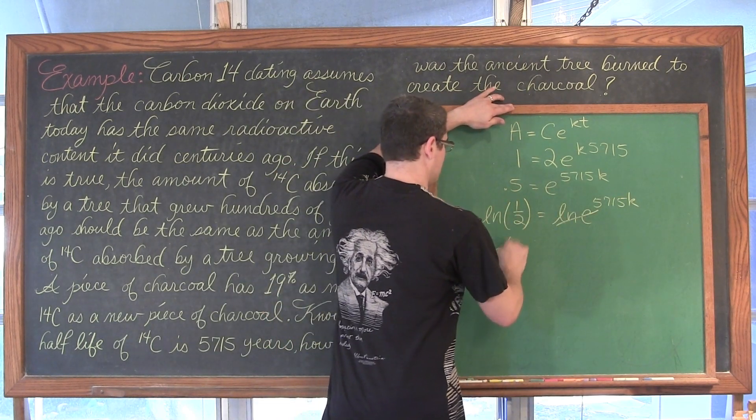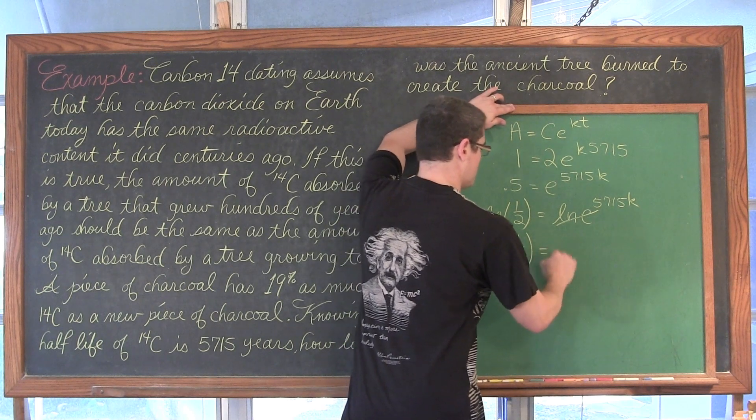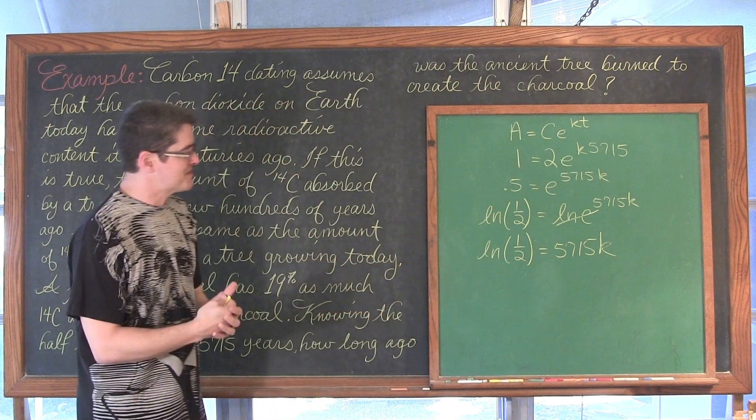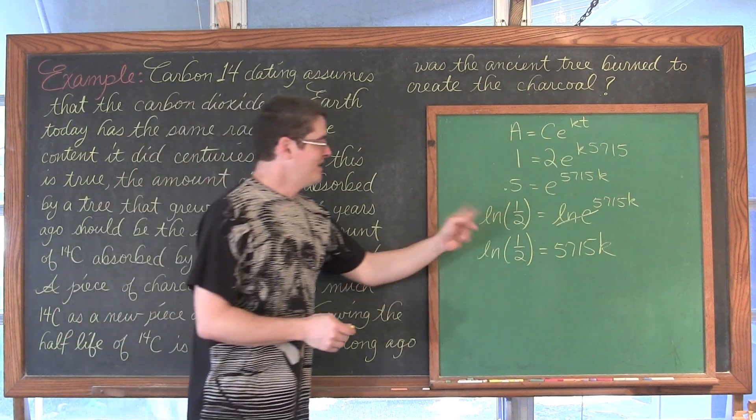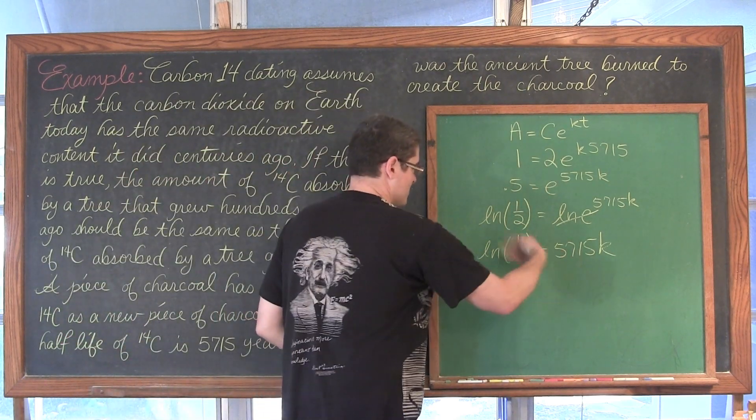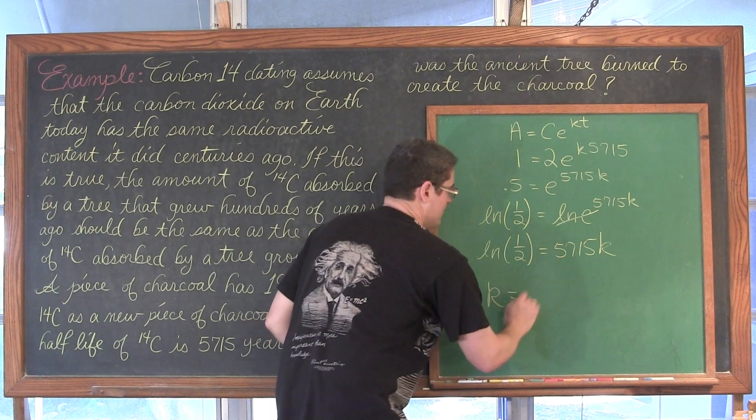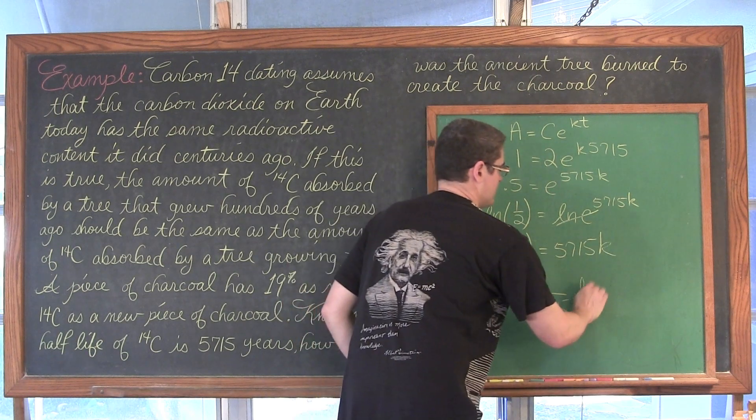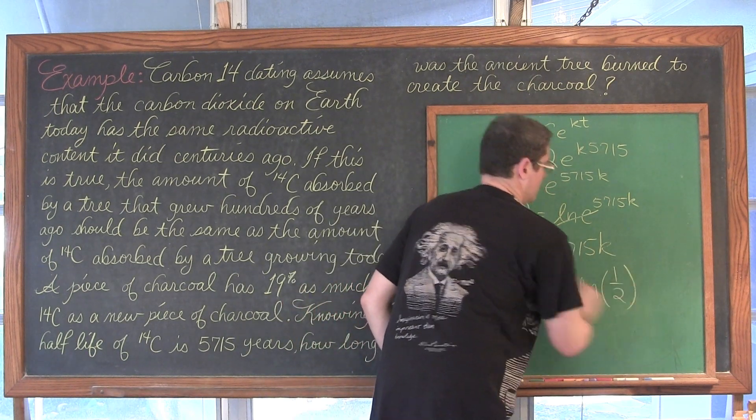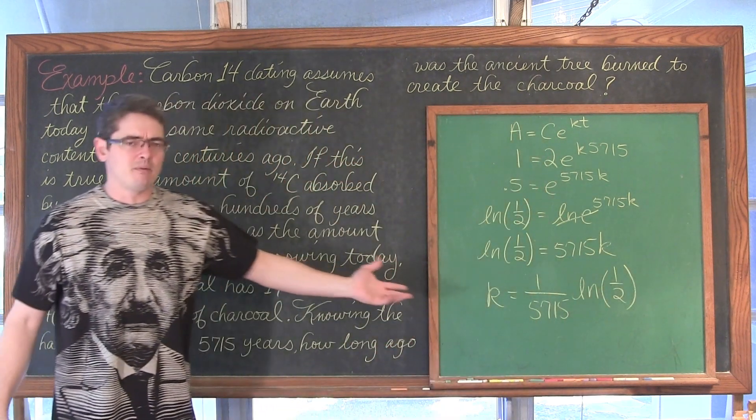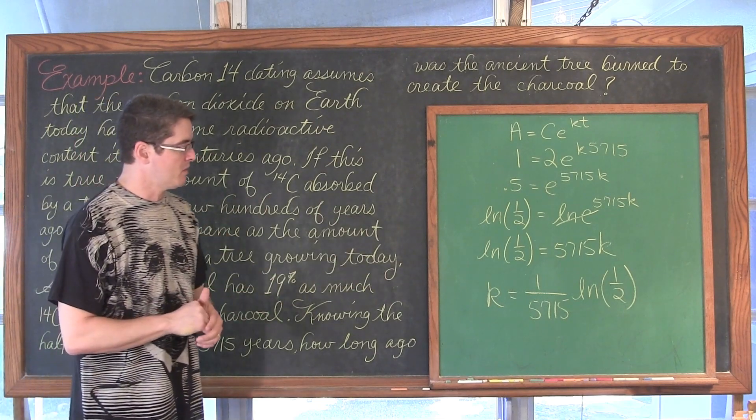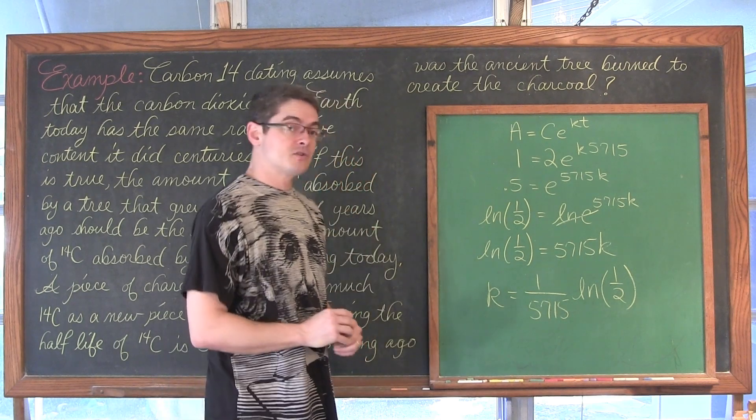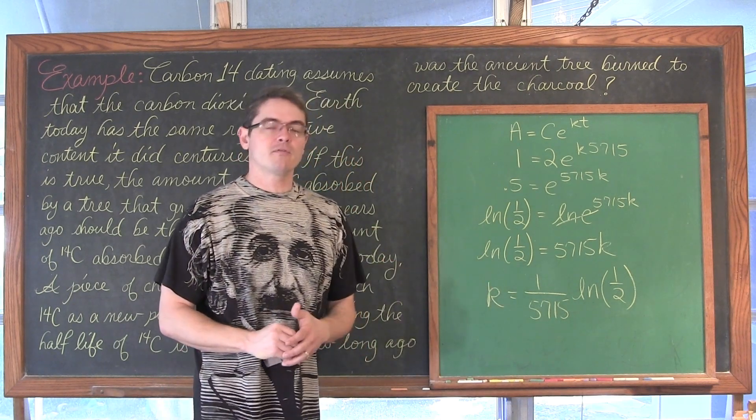We get the natural log of 0.5 is equal to 5715k. Then finishing this up by dividing both sides by 5715, I'm going to turn this around as well. We get k equals 1 over 5715 times the natural log of 0.5. You can probably make that a decimal right now. I'm going to keep it in exact form for a little bit longer.